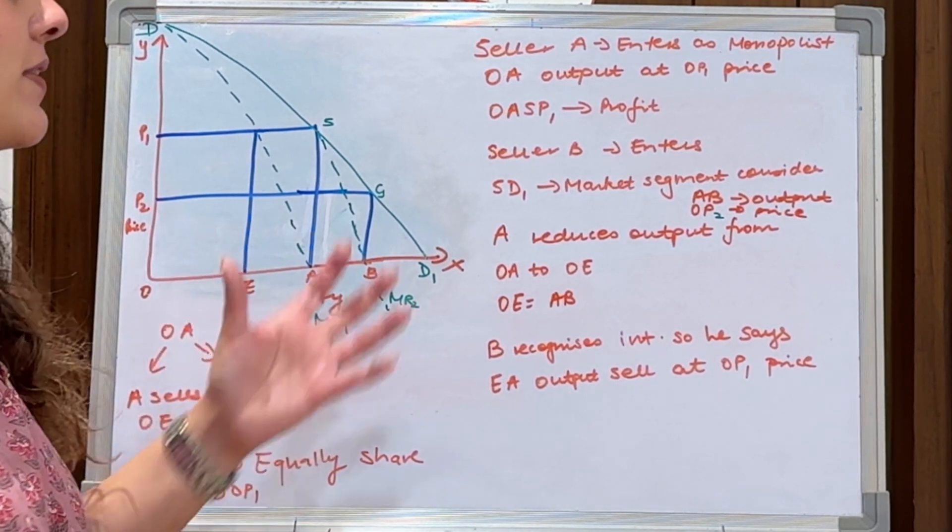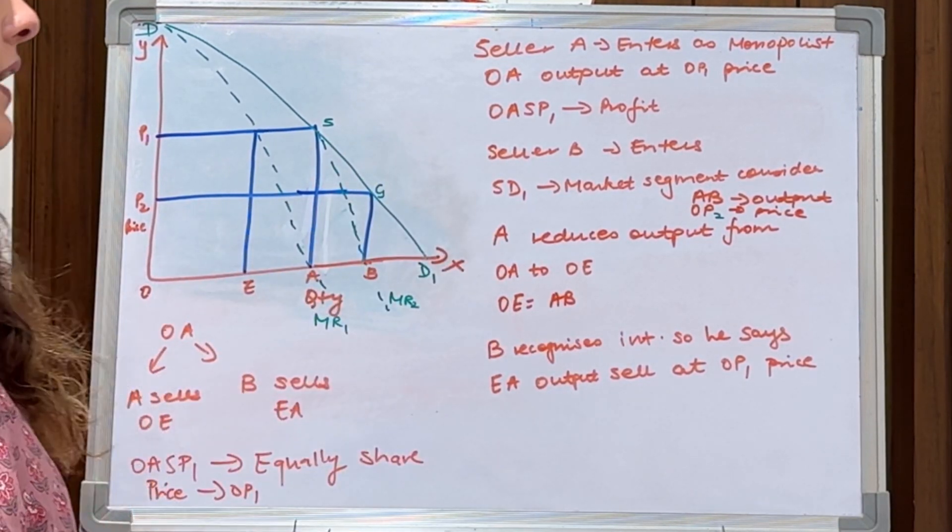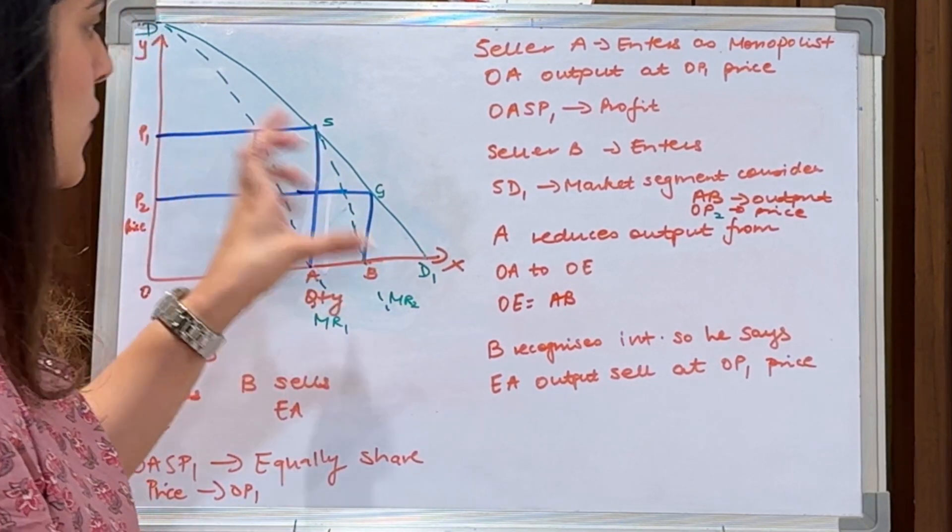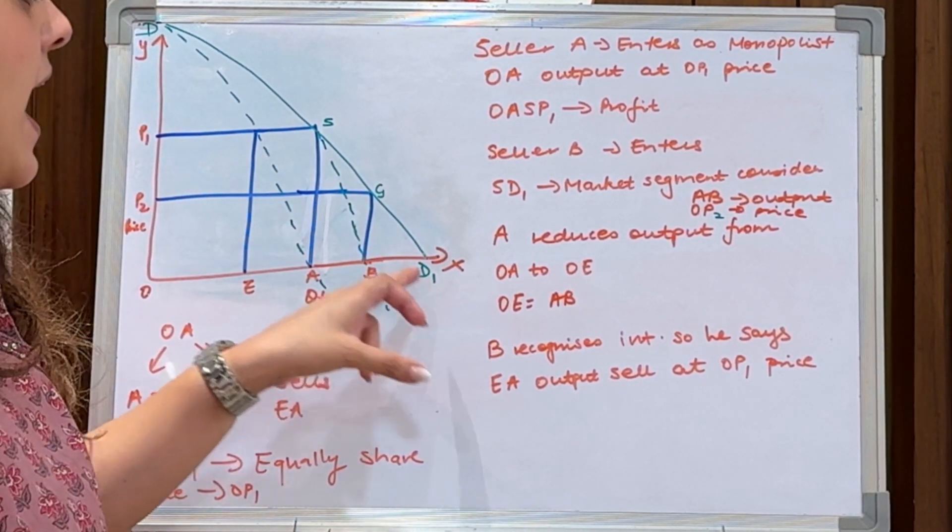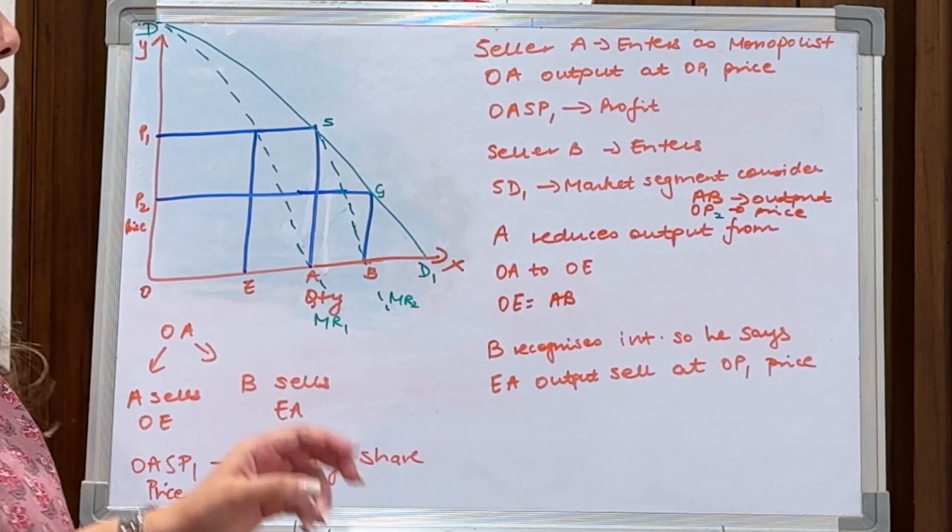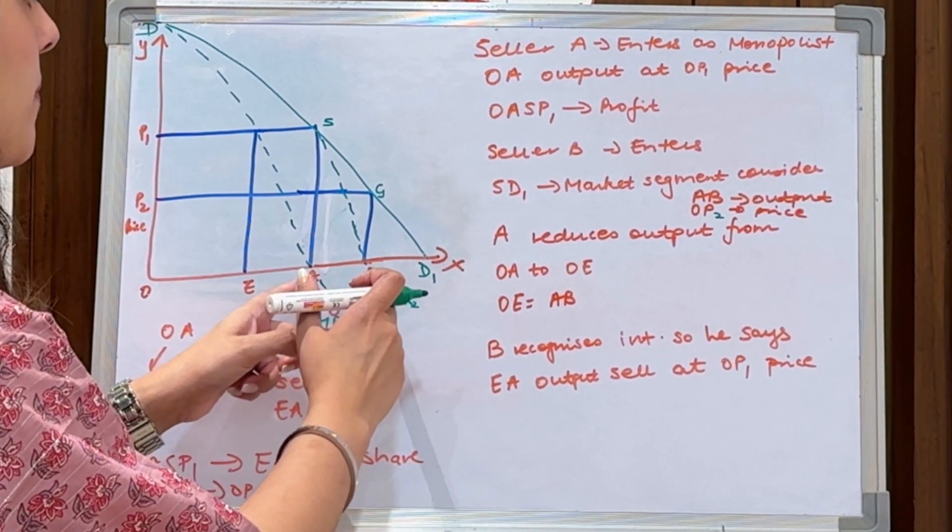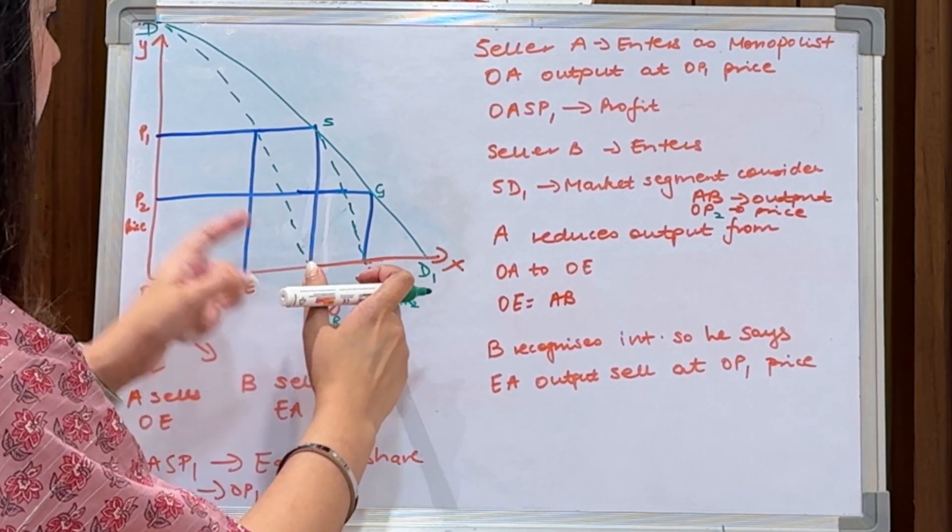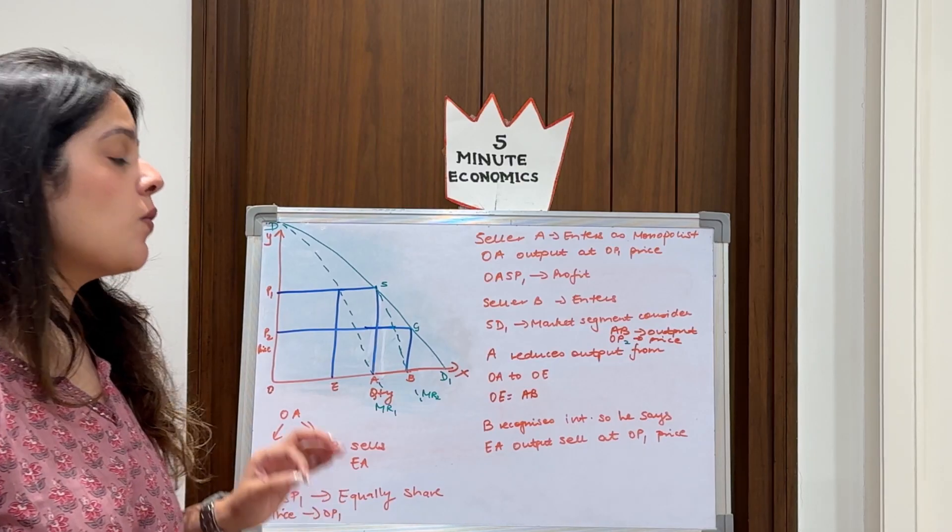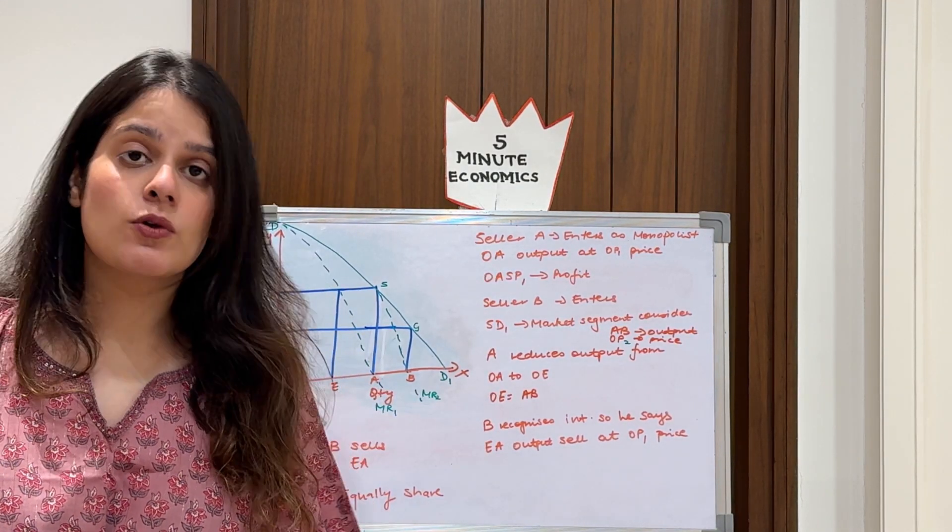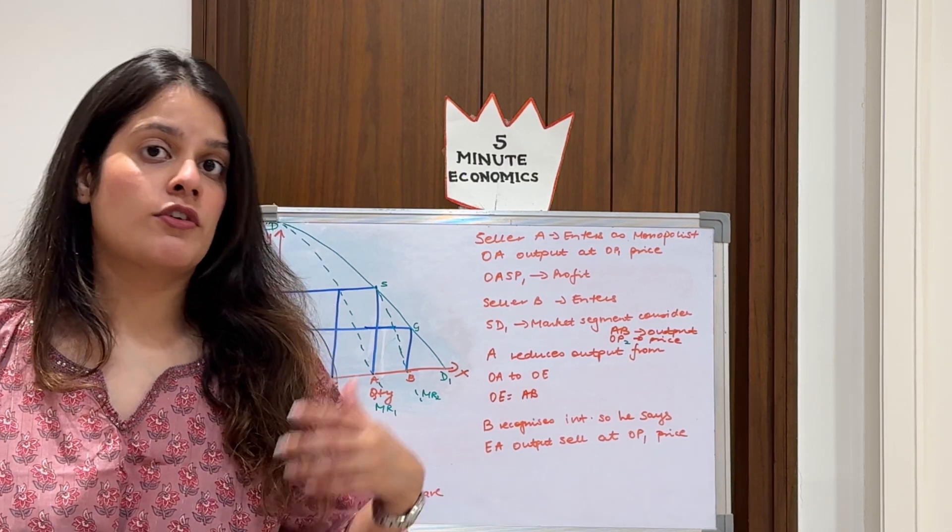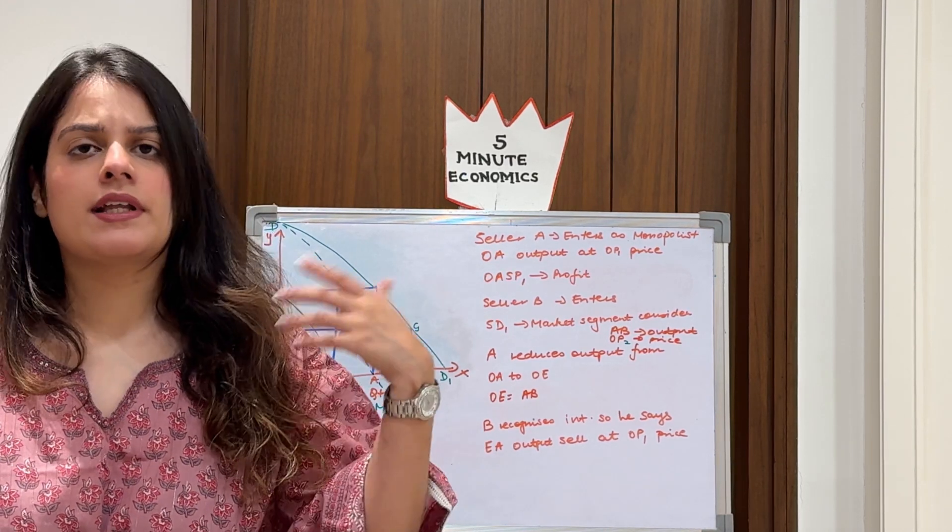But what happens? Seeing this lucrative profit, seller B also enters into the same market. Now he knows that he has this part of market demand which is left, which is SD1. And how much output does B produce? B produces AB amount of output, which you can see. This is the part he produces and at the price OP2. Now what happens? A is a smart guy. A has seen that B has also entered.